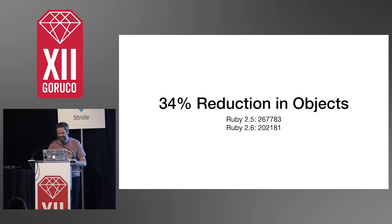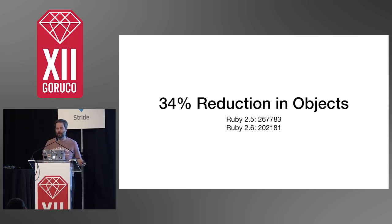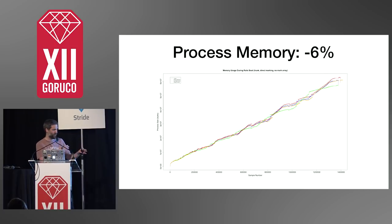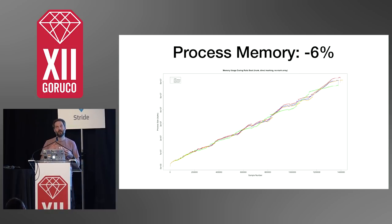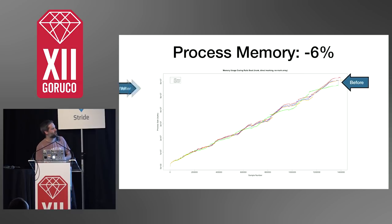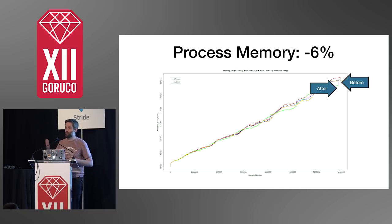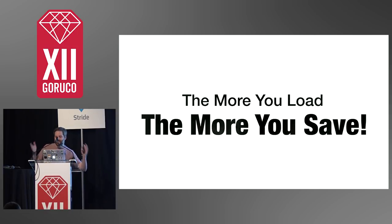Even though we've reduced the number of objects by 34%, that doesn't mean the amount of memory your program uses reduces by 34%, because there's a bunch of other stuff in there too. If we use the malloc stack logging we looked at earlier, we can see the actual impact on total memory usage. This is the same graph we looked at earlier but using this patch — the red line is before, and the green is after the patch is applied. Our process memory is reduced by about 6%. Of course, this actually depends on how much code you load, and the more you load, the more you save!